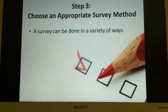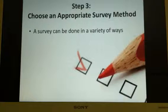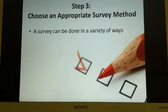Step three: choose an appropriate survey method. A survey can be done in a variety of ways. Some of the most effective means for conducting a survey are by paper, electronically or web-based, by telephone, or by group or individual interviews. There are many disadvantages to each of these types of surveys and they need to be thought out before the survey is conducted.